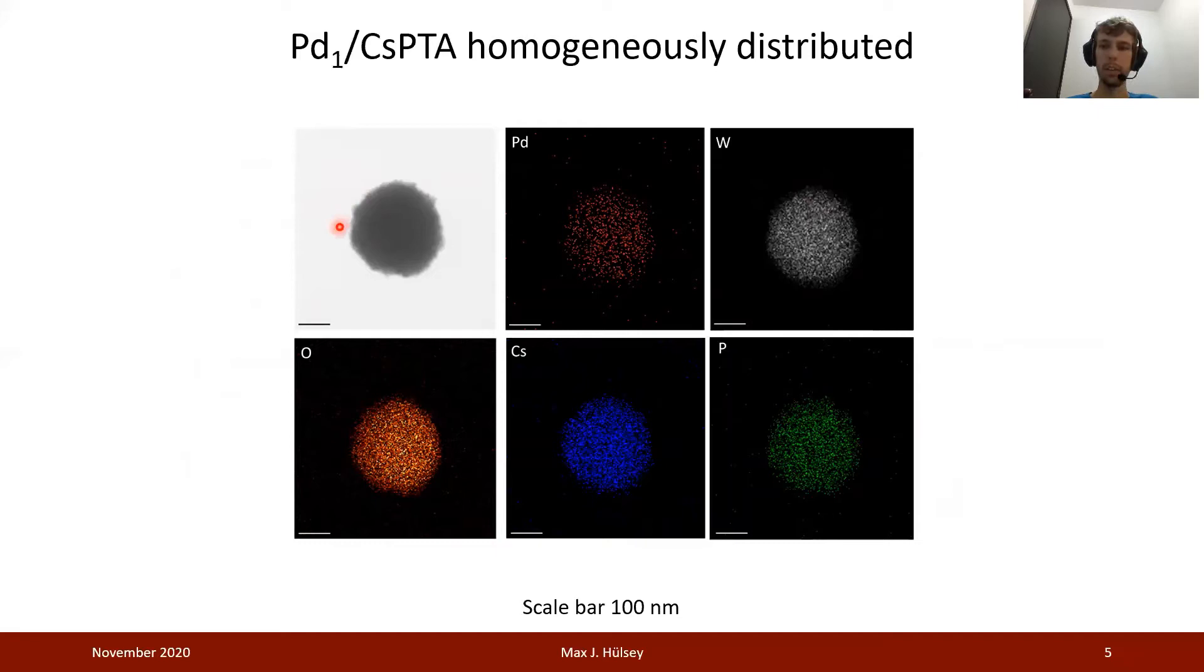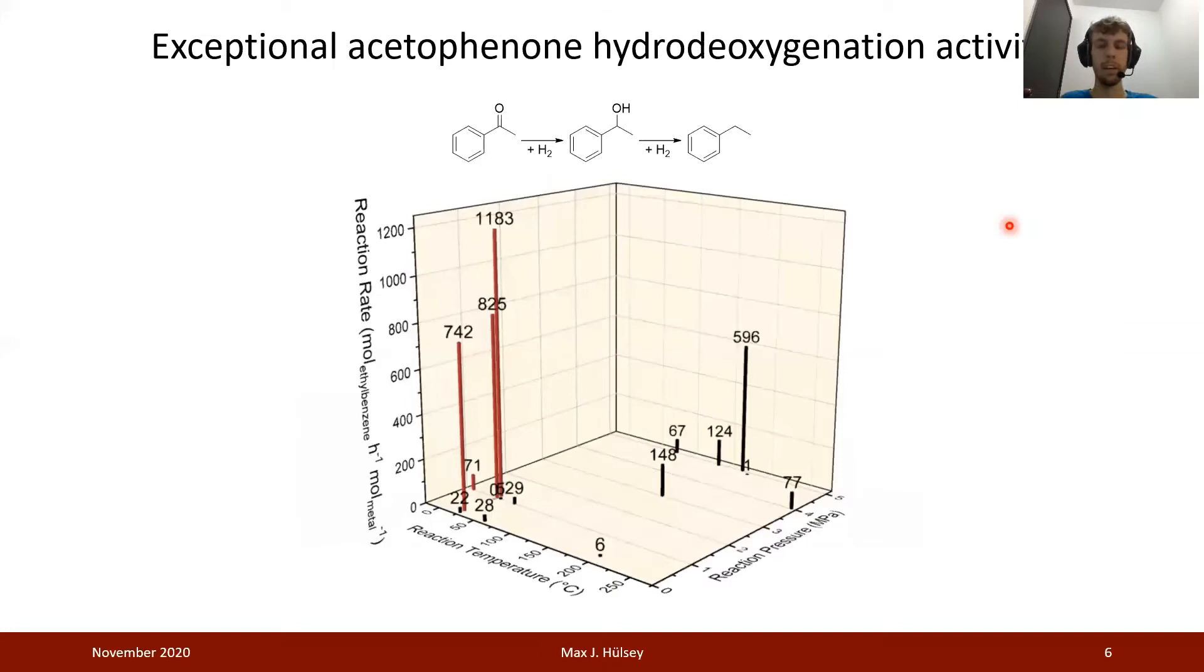Based on HAADF-STEM analysis, we see that our particles have roughly a diameter of 200 nm, and that palladium, tungsten, oxygen, cesium, and phosphorus are homogeneously dispersed throughout those particles. When testing the activity of those single-atom catalysts in the acetophenone, which we use as a model compound for the HDO, we see that it has exceptional HDO activity even under fairly low temperatures as well as fairly low pressures.